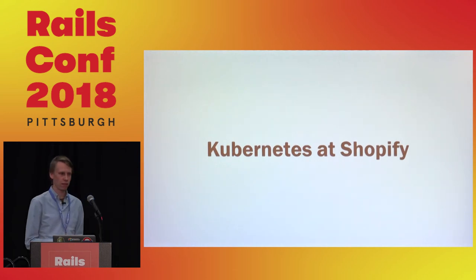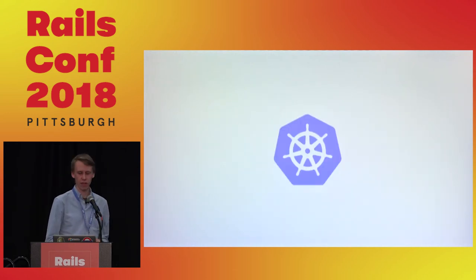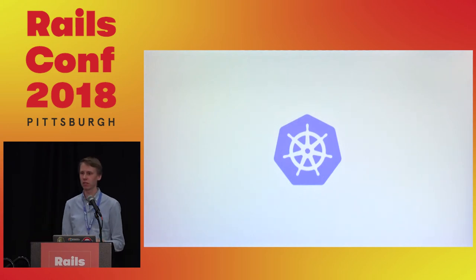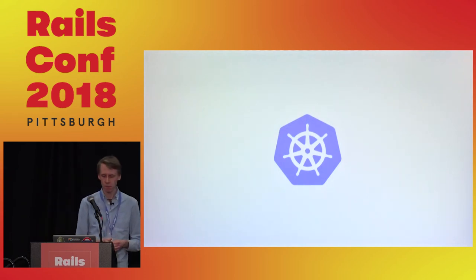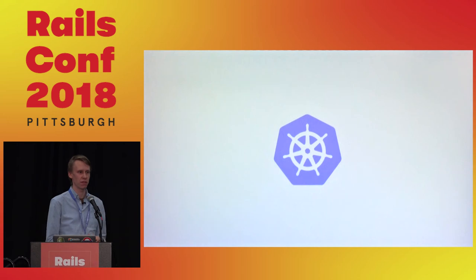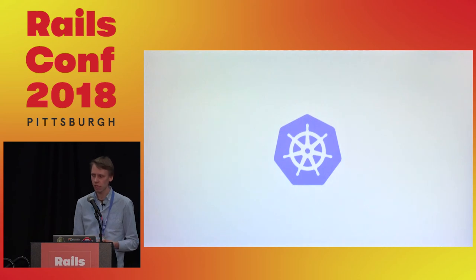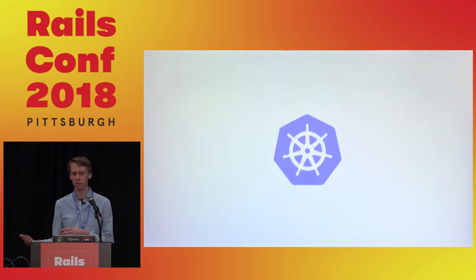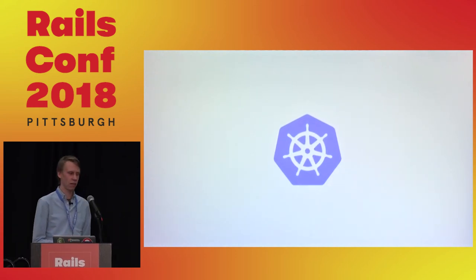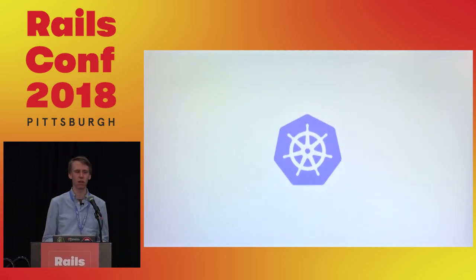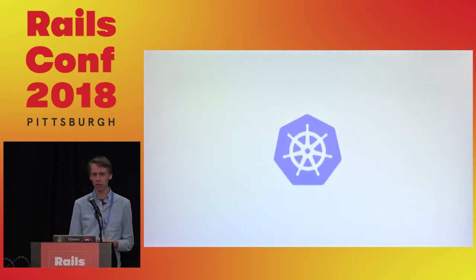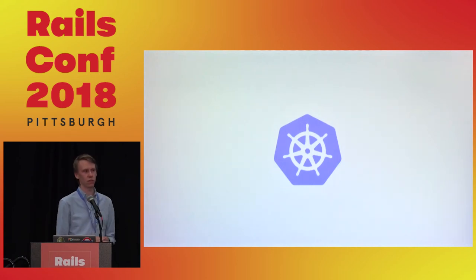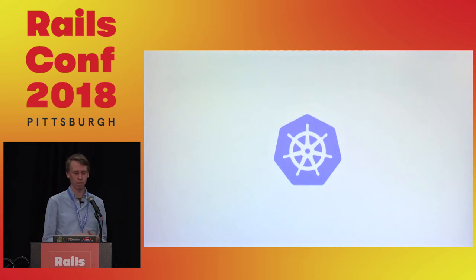At Shopify we had hundreds of apps running in different environments — some in Heroku, some in AWS, some on physical hardware managed with Chef. What we wanted for our developers was to stop being exposed to all that infrastructure and just have a platform to run Rails apps somewhere. So we decided to invest in something like Kubernetes, which would allow us to scale containers in the best way and also utilize resources in the best way.